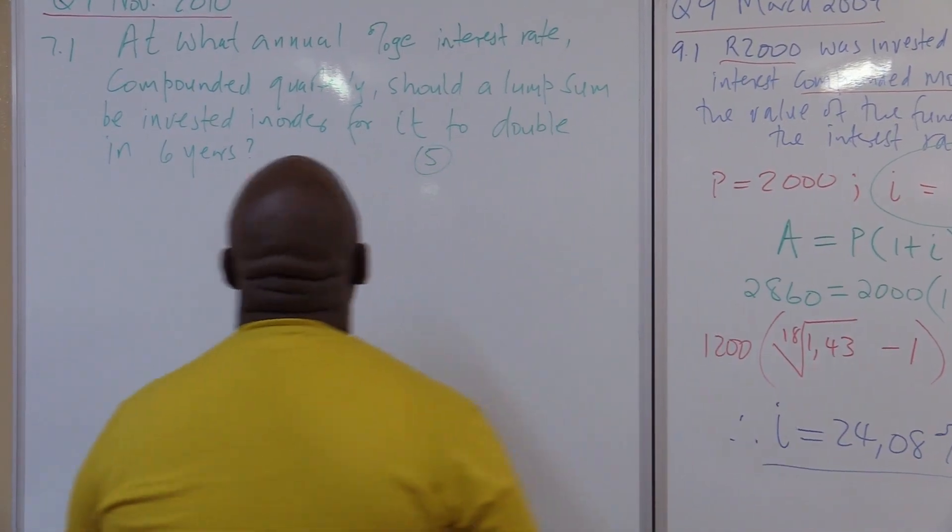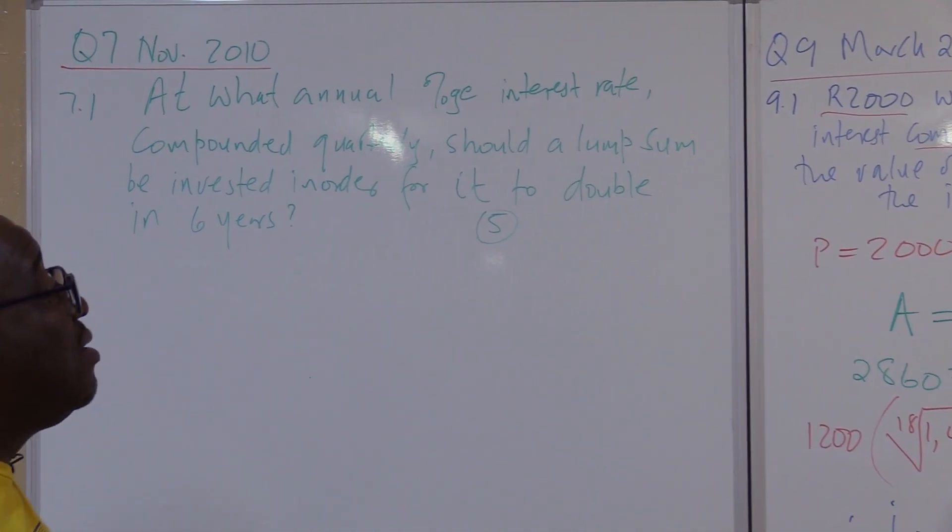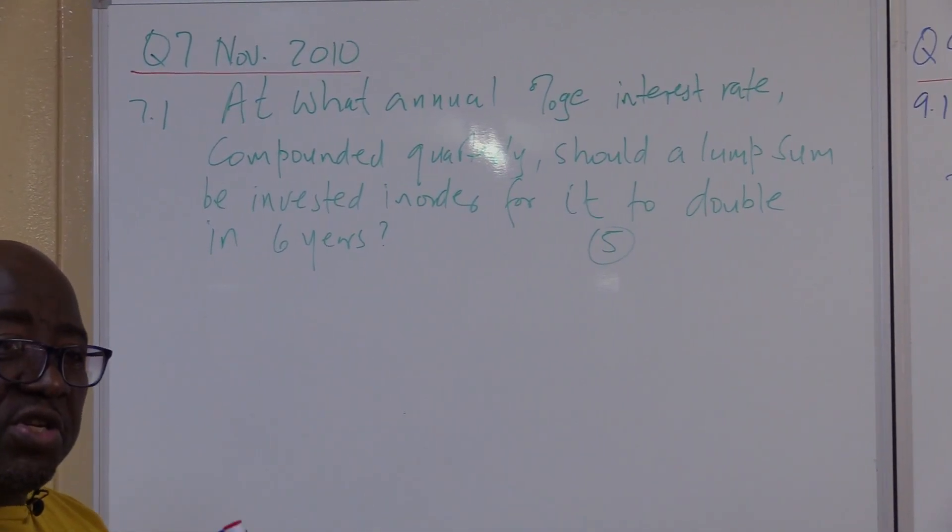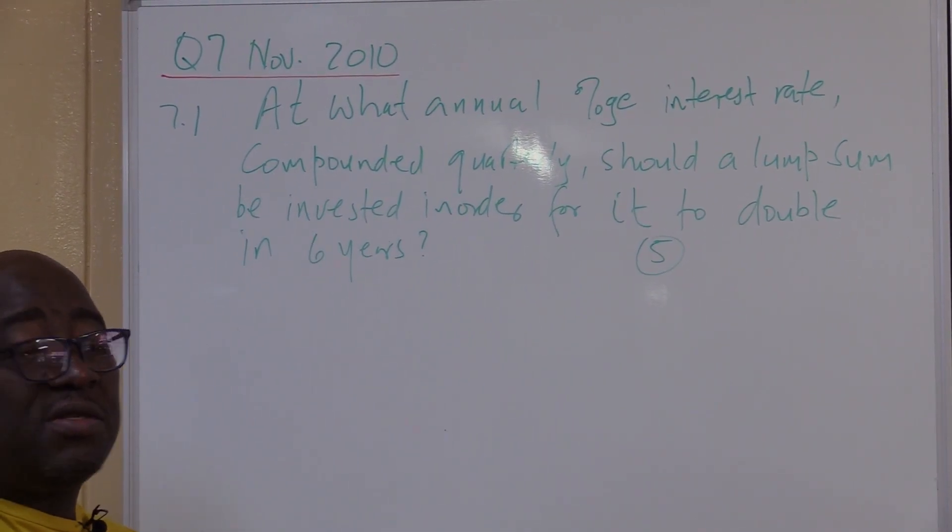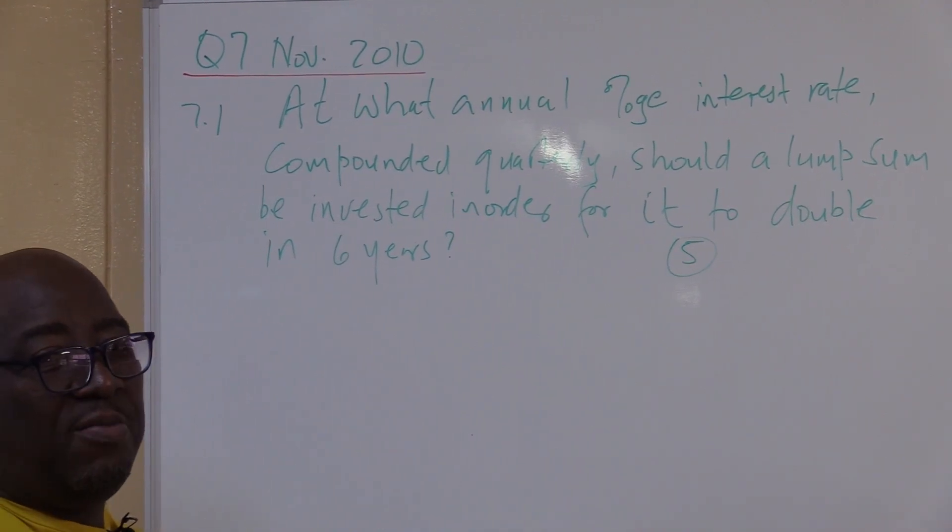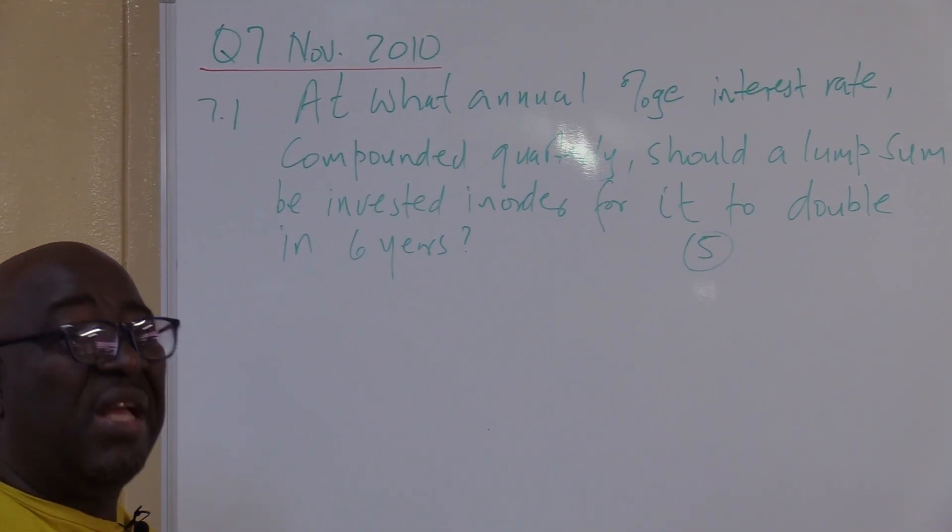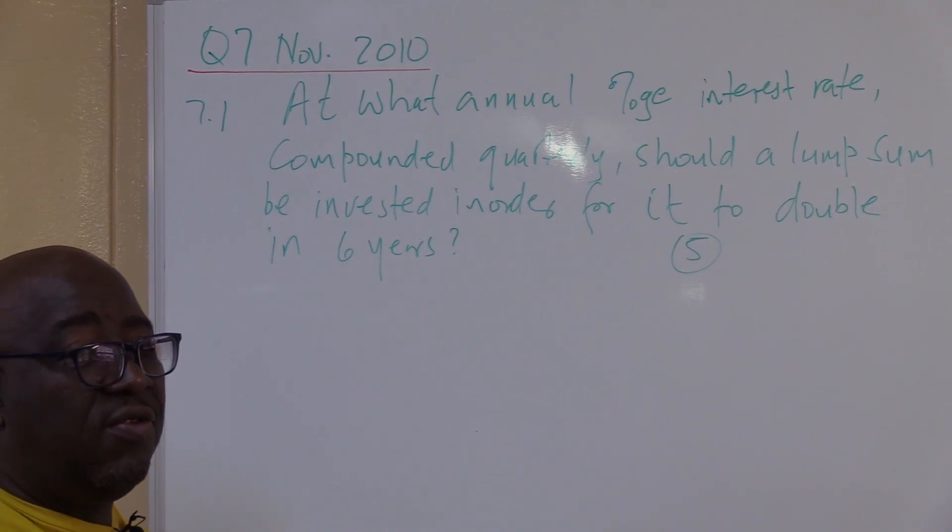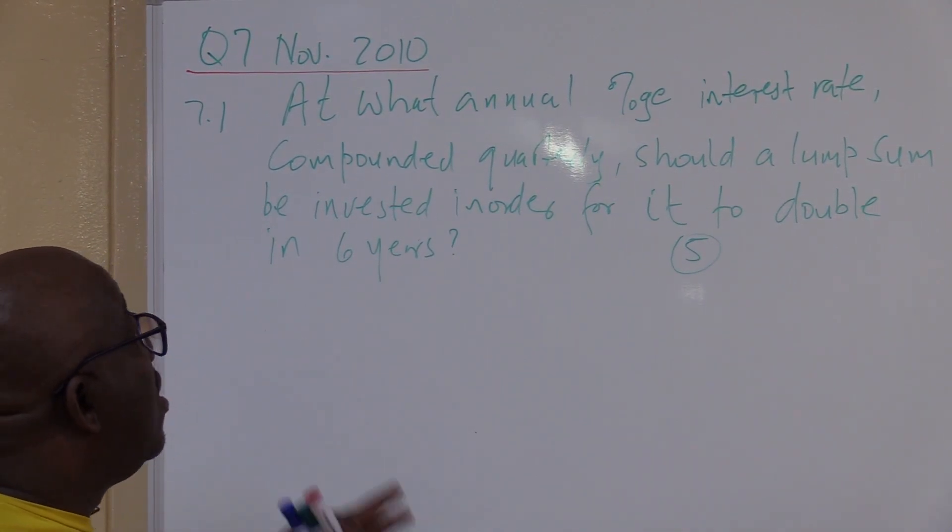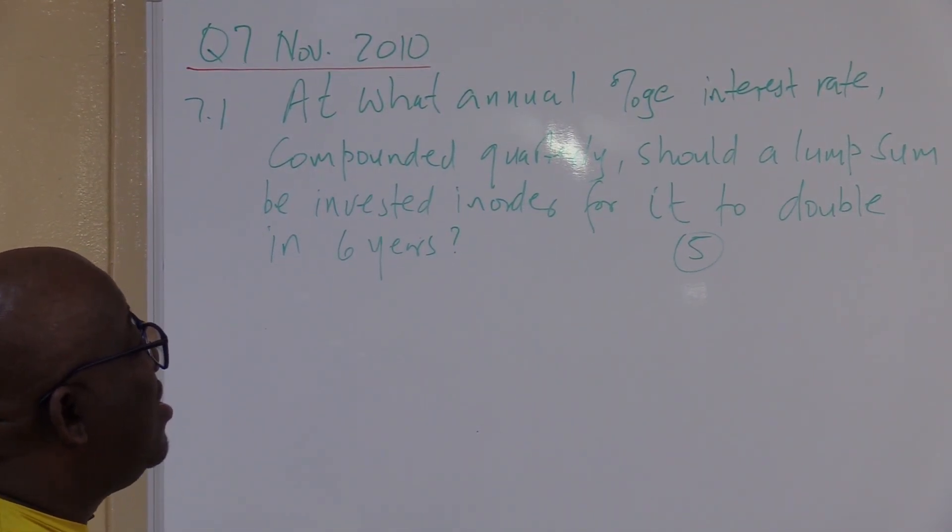Let's look at how they set it in November 2010. It was question seven. Remember, the first part of a question is usually about common interest or simple interest. 99.9 percent it will be compound interest. The next one will be annuities, whether it's future value or present value.